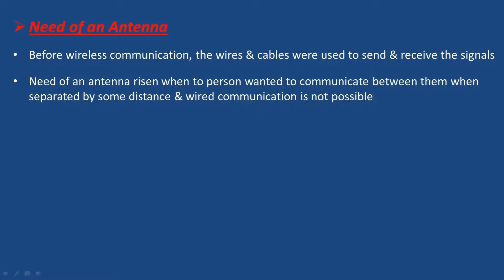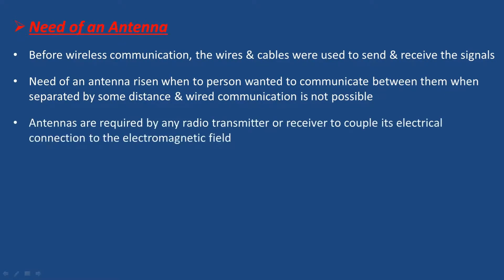The need of an antenna arises when two persons want to communicate between them when separated by some distance and wired communication is not possible. The antenna is required by any radio transmitter or receiver as the electrical connection to the electromagnetic field.